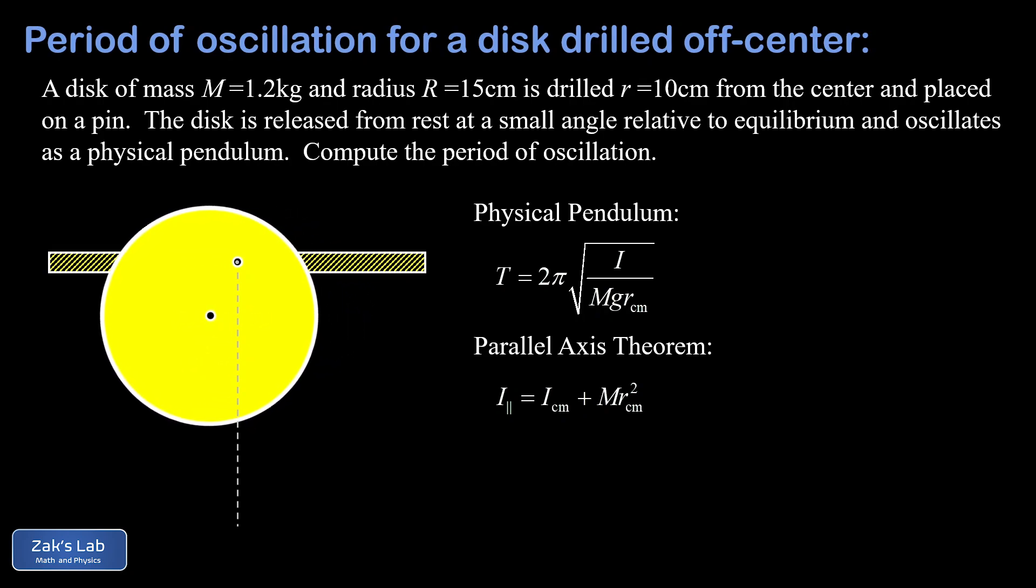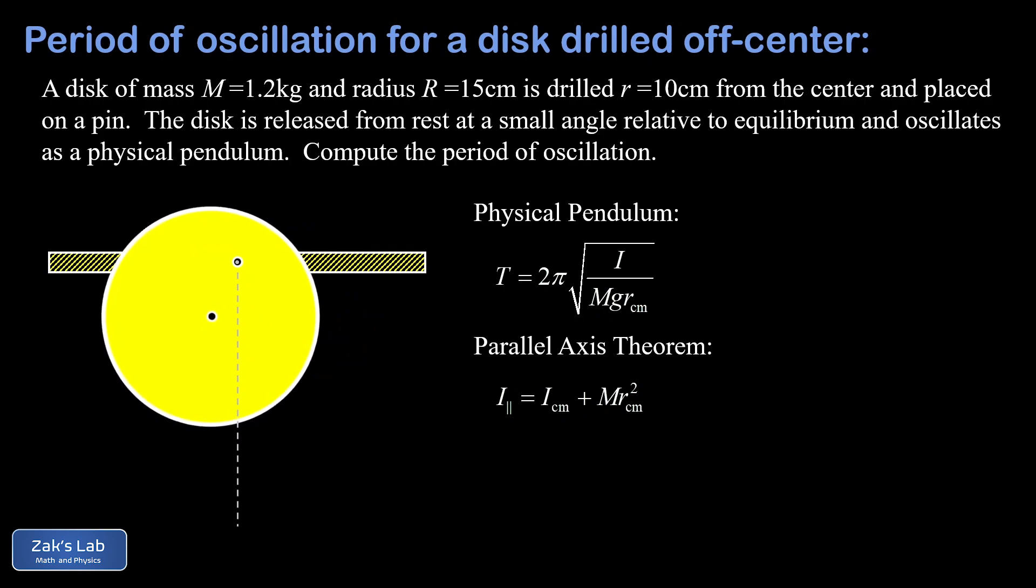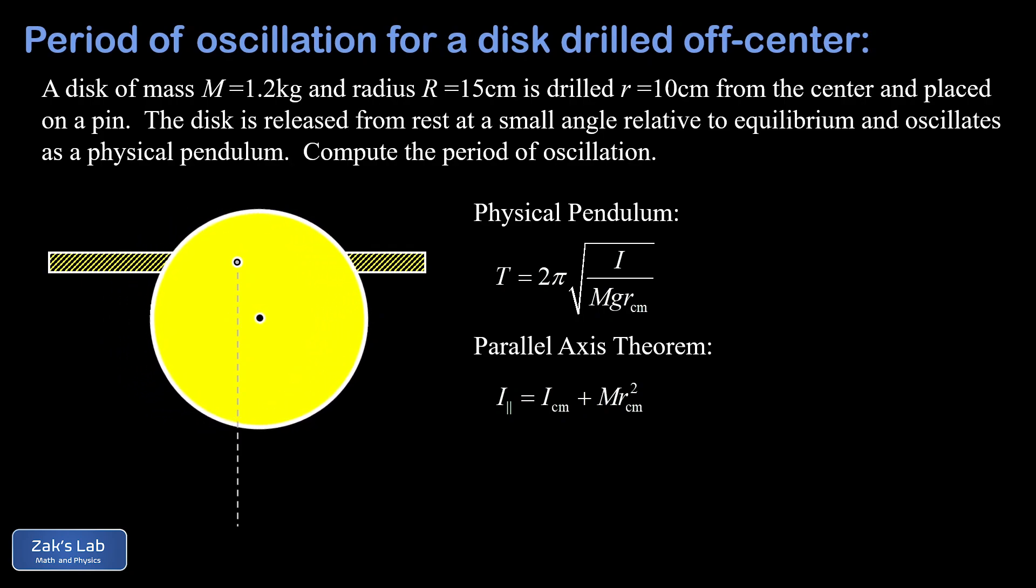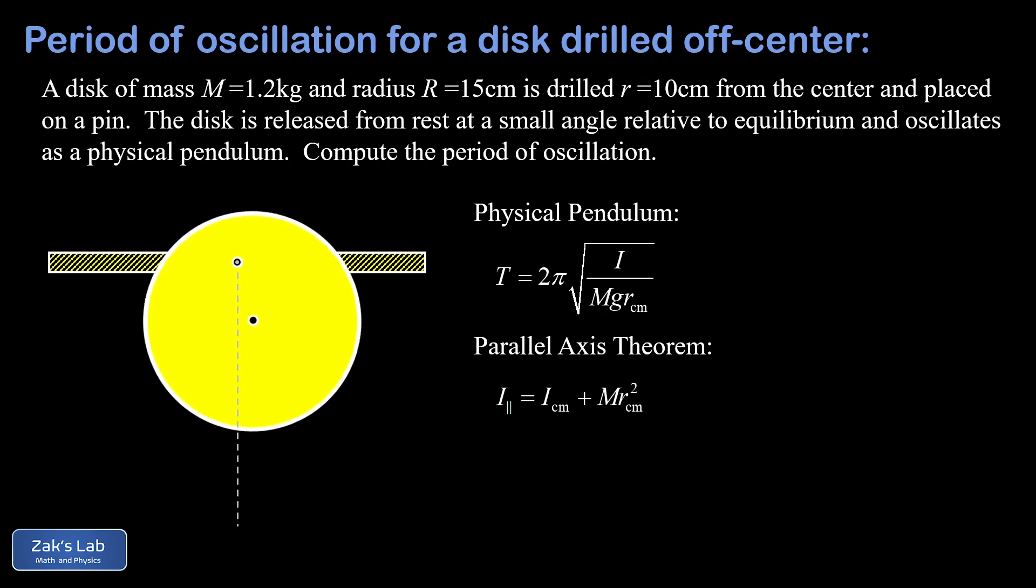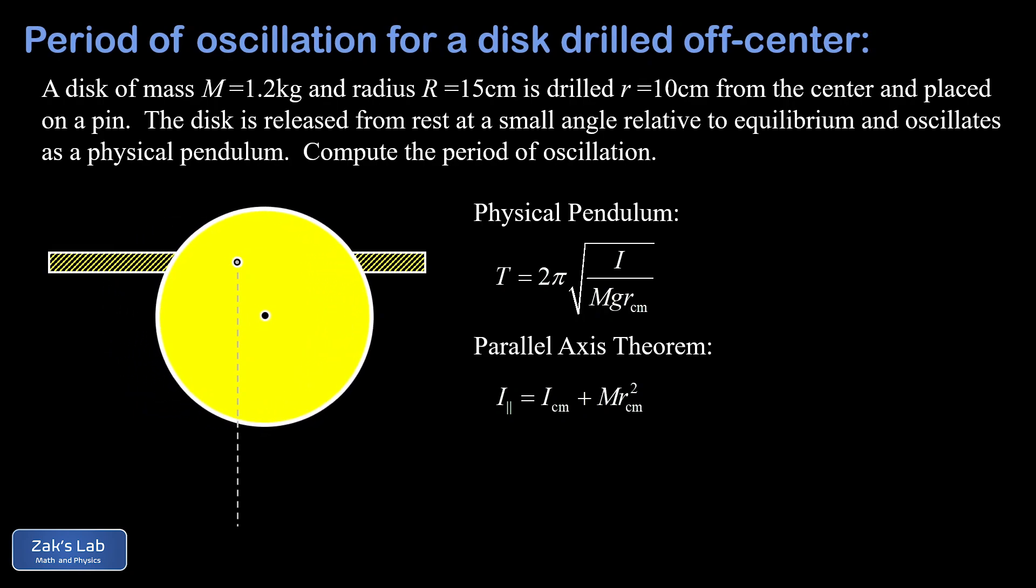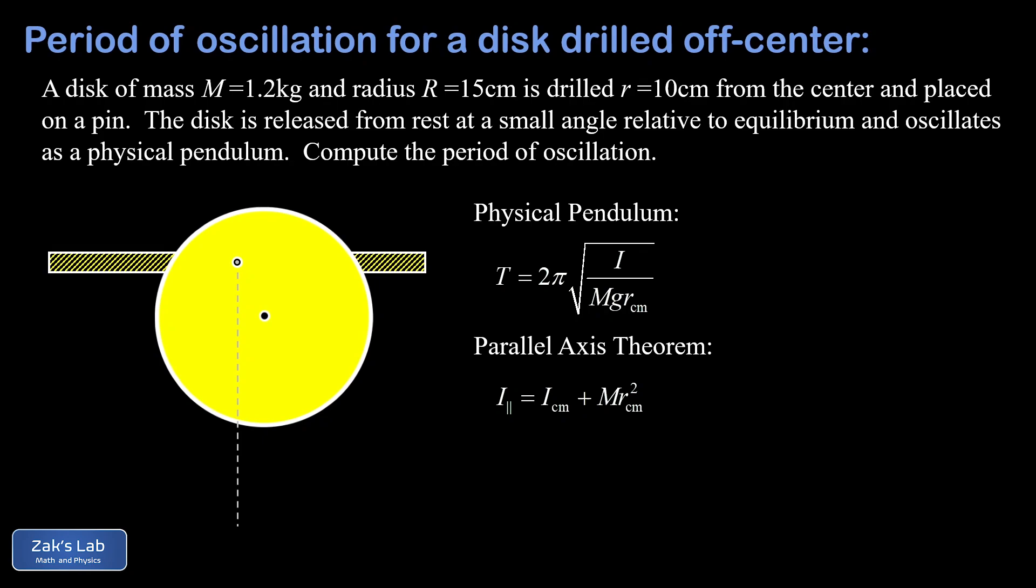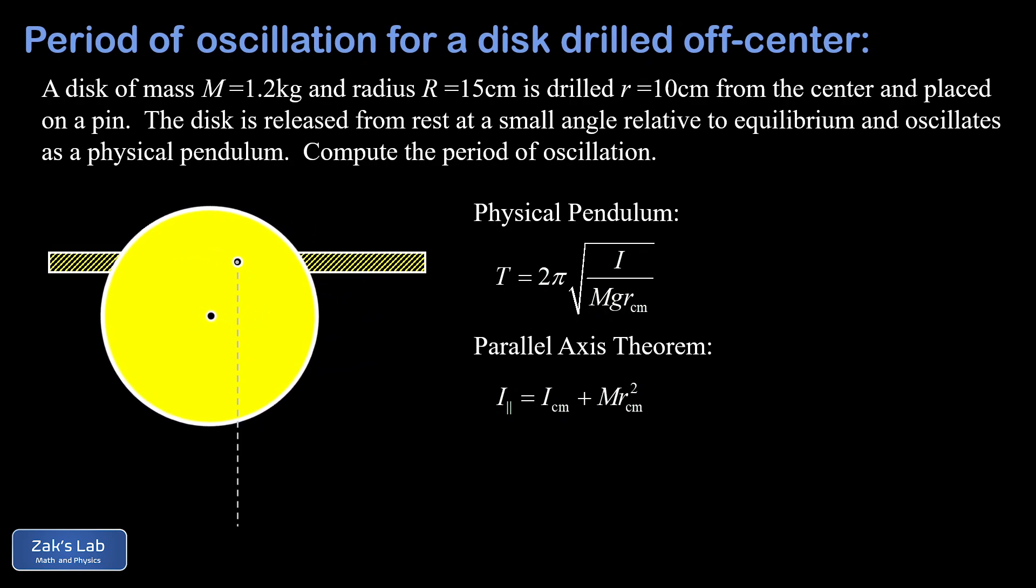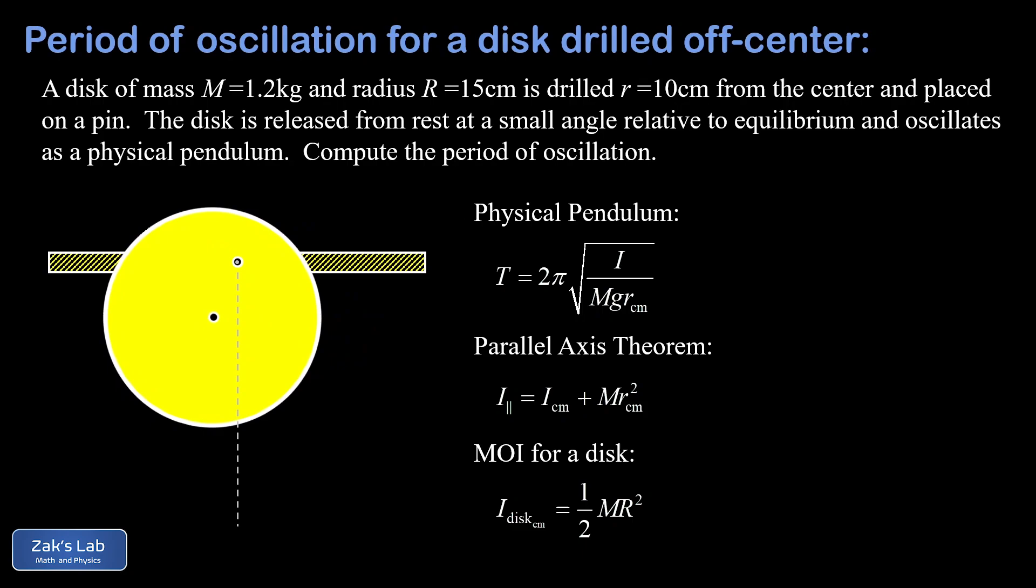Second, we need a quick reminder of the parallel axis theorem. This is going to allow us to compute the moment of inertia of the disc with respect to that off-center hole. The parallel axis theorem tells us that all we have to do is take the moment of inertia of a disc with respect to its center of mass and then add in this extra term Mr² where that r is the distance between the two axes—in other words, the distance between the center of mass of the disc and the actual rotation axis 10 centimeters away.